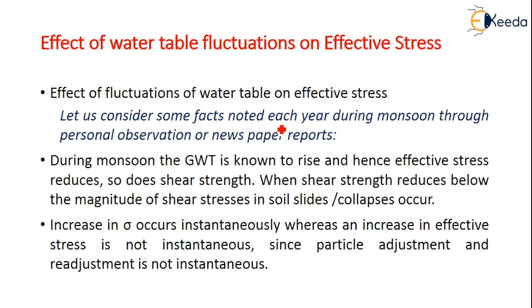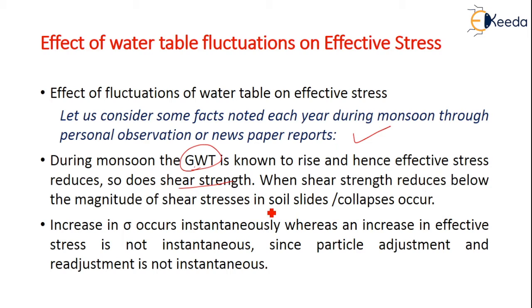Considering the effect of water table fluctuations on effective stress from personal observation and newspaper reports: generally during monsoon, the groundwater table is known to rise due to rains, and hence effective stress reduces. Shear strength also reduces, and when shear stress drops below the required magnitude, slides or collapses occur.